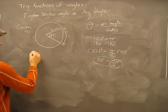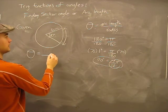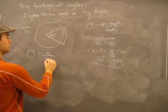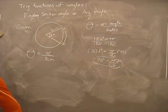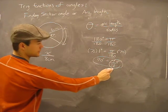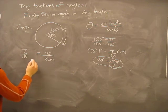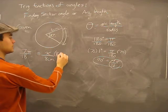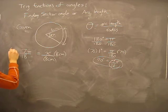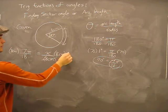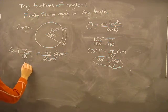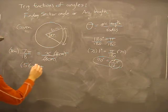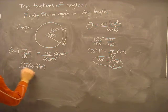So if theta equals arc length over radius, I can plug in seven pi over eighteen equals x over 8 centimeters. All I have to do is solve for x to find the arc length. Multiply both sides by 8 centimeters — these cancel — and I'm left with 56 centimeters times pi over 18.